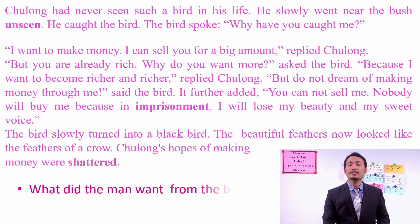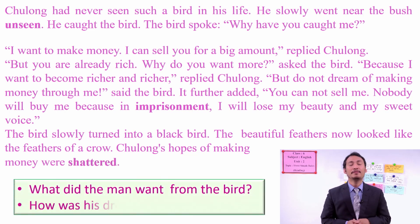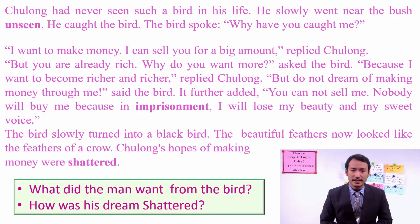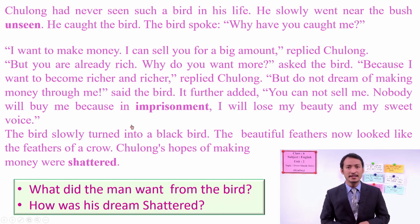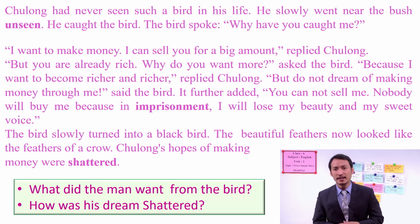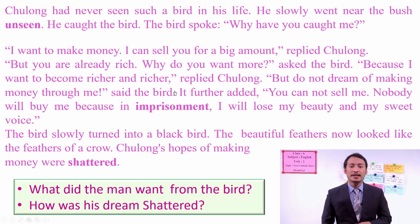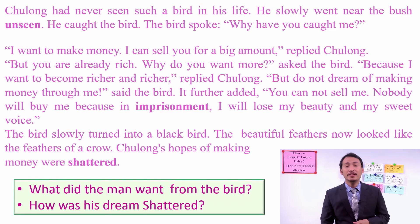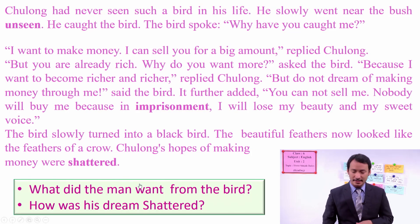Now let's answer the questions. What did the man want from the bird? He wanted to make money — he wanted to become rich or get more riches from the bird. And how was his dream shattered? Because in imprisonment the bird changed its color to black, so his dream of making money was shattered.